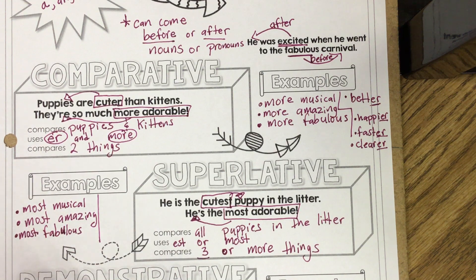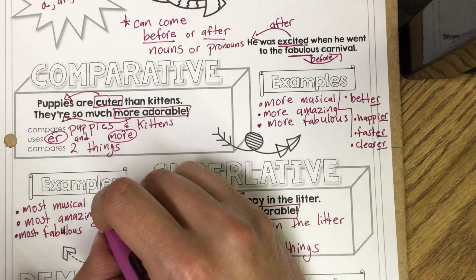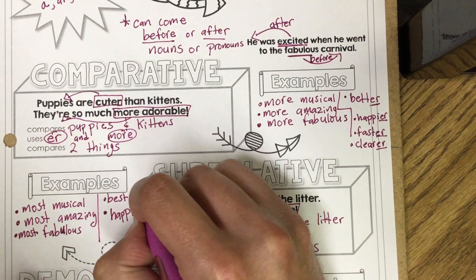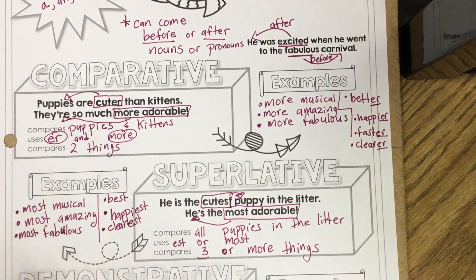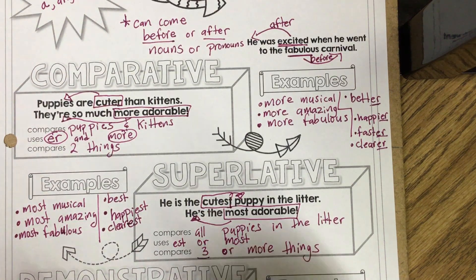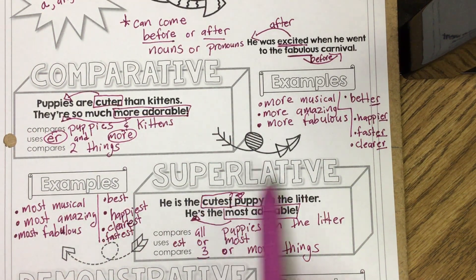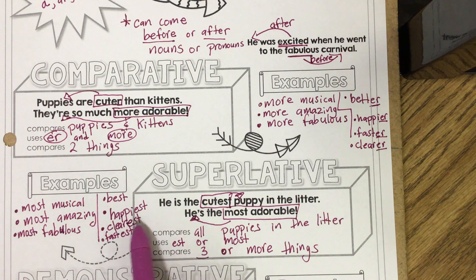Our examples for superlative adjectives ending in -est are: best, happiest, clearest. A lot of you have already been using these adjectives without realizing it. Let's add one more: fastest. Superlative adjectives end in -est or start with the word 'most.' Our examples are most musical, most amazing, most fabulous, best, happiest, clearest, and fastest — they end in the suffix -est or start with the word 'most.'